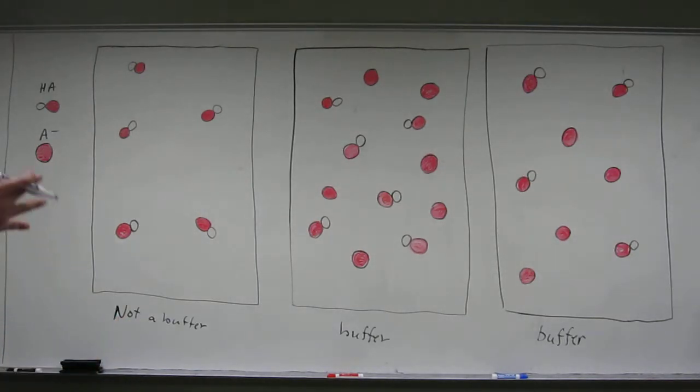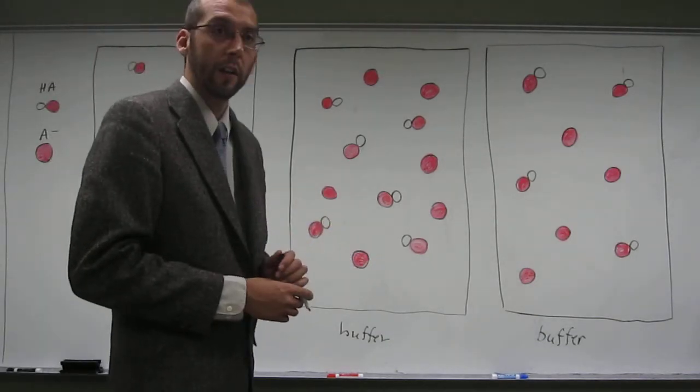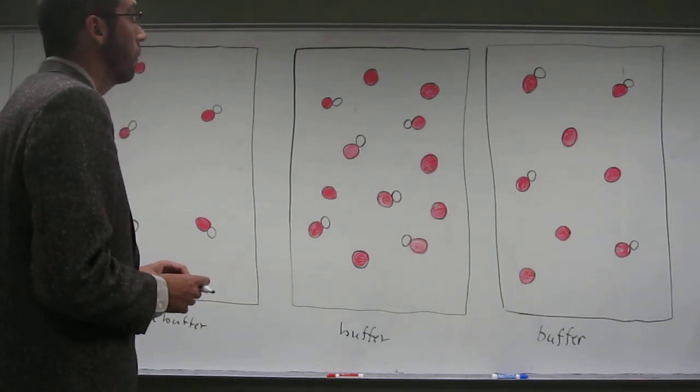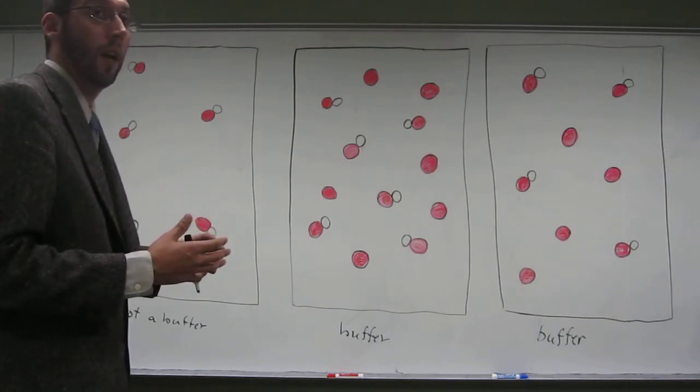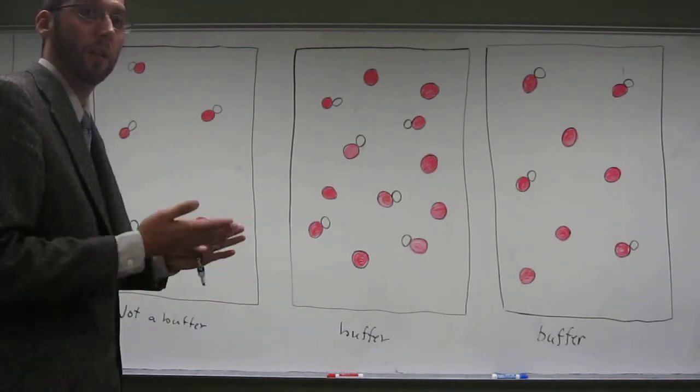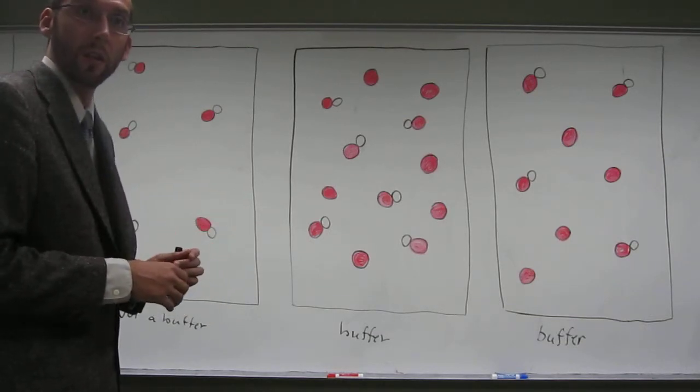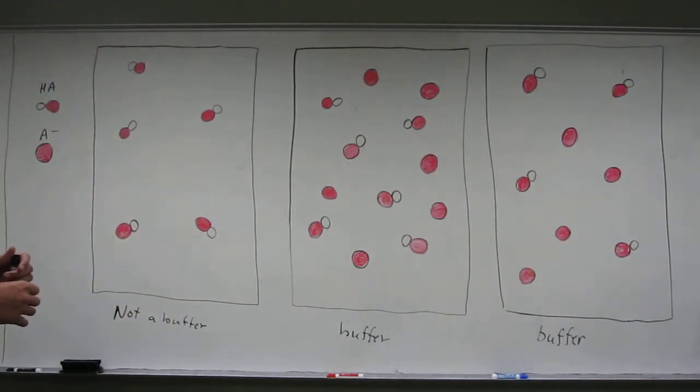The next question asks, which of these buffers has the highest buffer capacity? And do you recall what we said about buffer capacity in our lecture? That the one with higher concentration. Yeah, the higher concentration. So we want the one that has equivalent amounts of the acid and its conjugate base, or close to equivalent amounts, that gives us a good buffer. And the one with the highest concentration of those two things. So which one would have the highest buffer capacity?